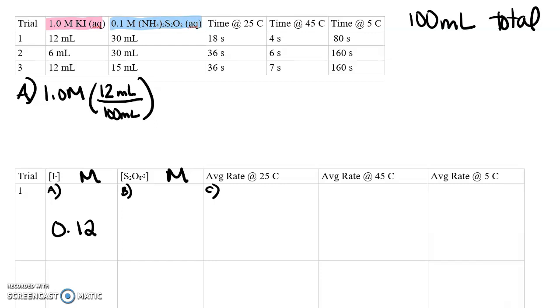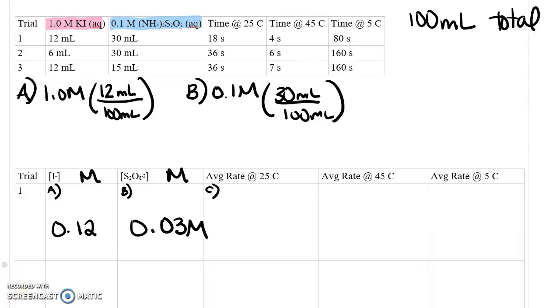I'll do the same thing for the S2O8. In that particular case, we had a 0.1 molar solution to start with, and we had 30 milliliters out of the total 100 milliliter volume. So in the entire reaction vessel itself, my concentration of S2O8 was 0.03 molar. I would actually suggest that you pause here and figure out the rest of your concentrations because you're going to need those to move forward with calculating the average rates in just a moment.